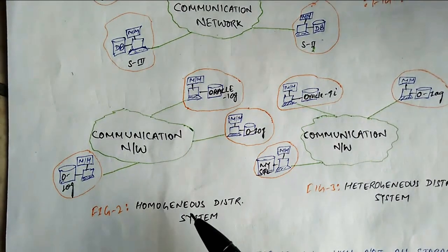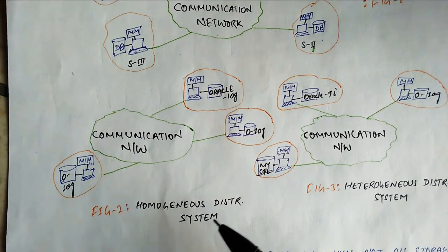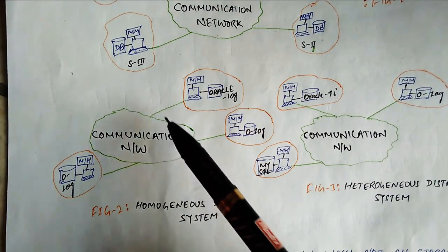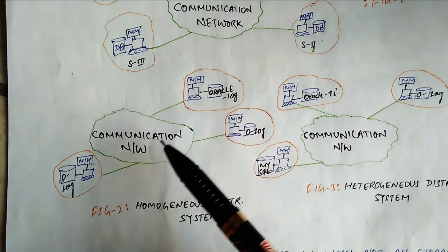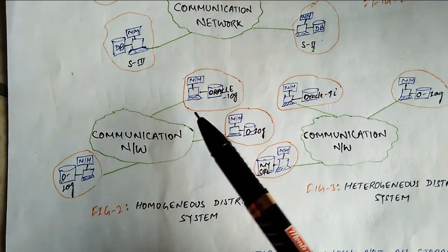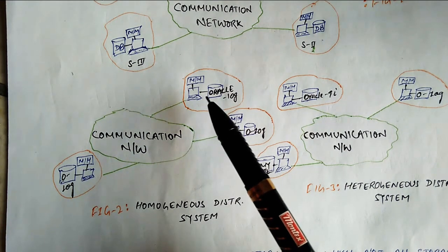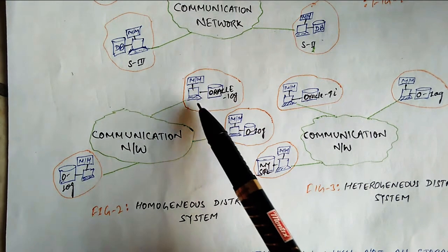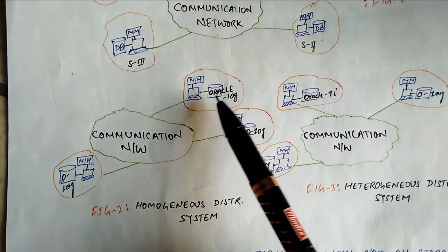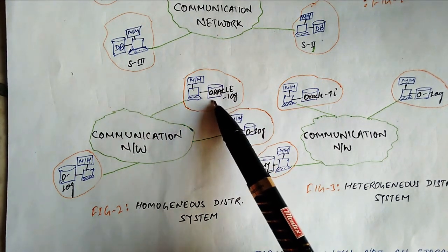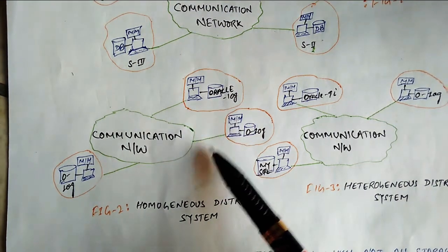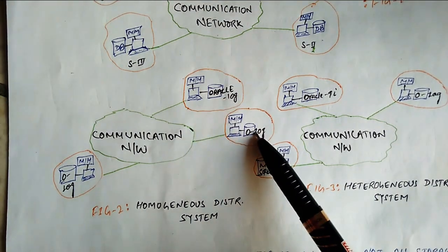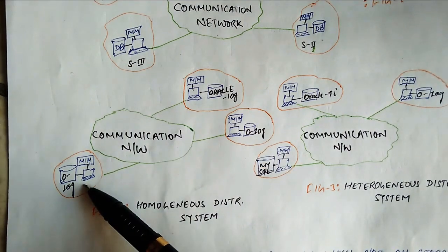In Figure 2, we have a Homogeneous Distributed System. This is a communication network with three sites connected. The main concept is that the computer system, operating system, data structure, and database management system software are all common. For example, all sites are running Oracle 10G.